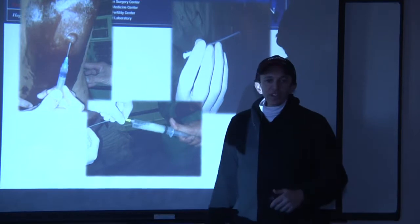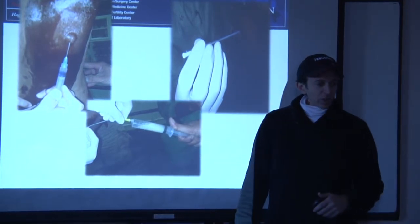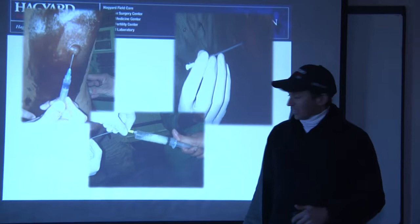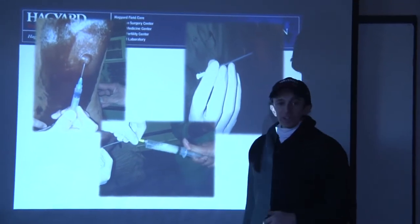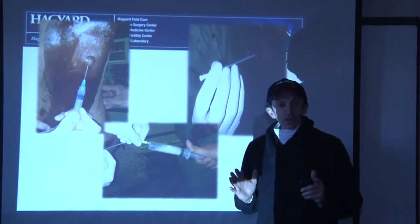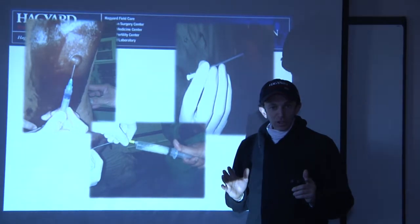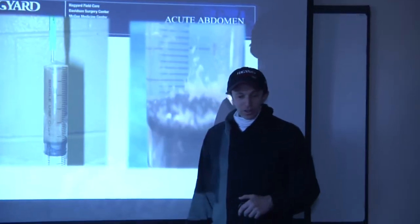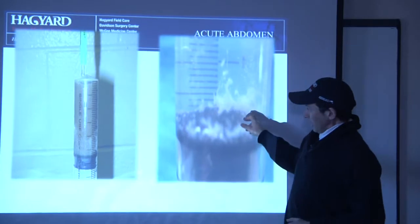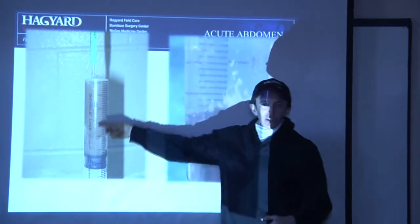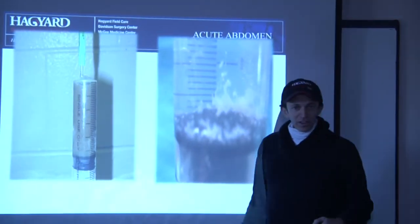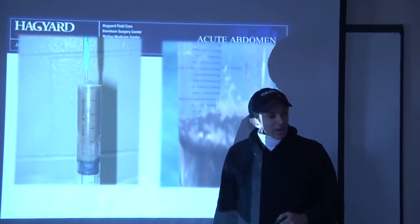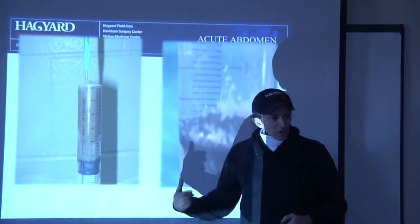We can diagnose it several ways. We can do a transtracheal wash, where we literally stick a needle into the trachea and sample the fluid. That fluid should always be clear enough that you can read a newspaper through it. If it starts looking like milk, you know you've got a problem. Look at this particulate matter here — can you read a newspaper through that? No. That's acute inflammation, and you may have bacterial pneumonia on top of this.